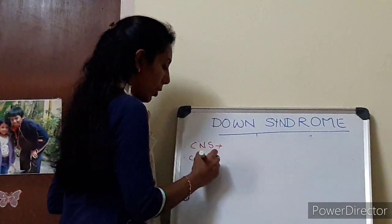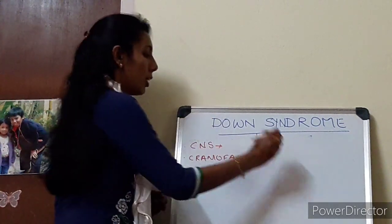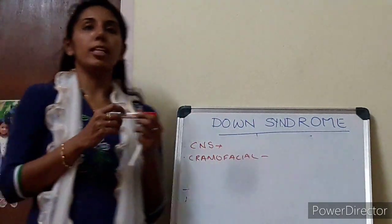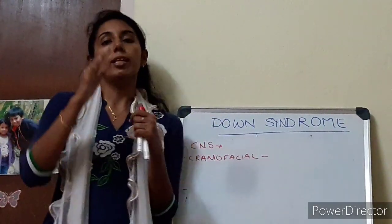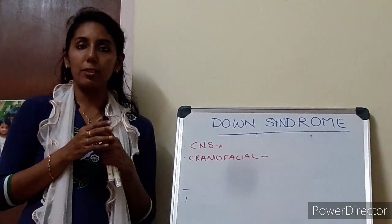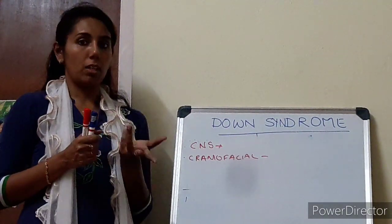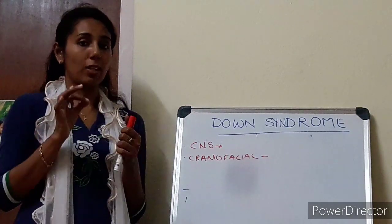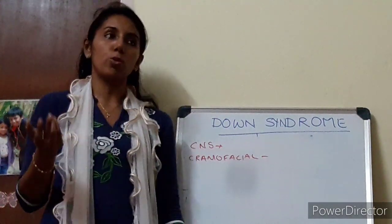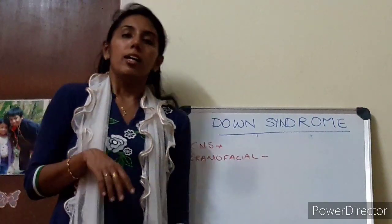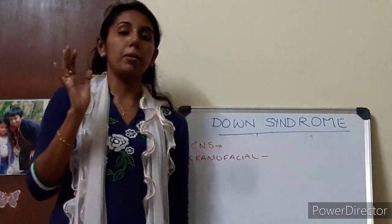What are the craniofacial anomalies we can see in a case of Down syndrome? If you see the head of the child, they will have a flat occiput, the head will tend to be small, and they may have three or more fontanels with delayed closure of fontanels. The flat occiput is very marked.